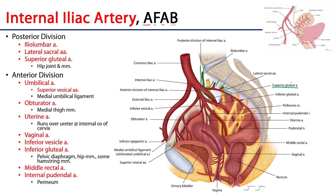The anterior division has very many branches, and you're really going to have to pay close attention to where these branches originate from the anterior division of the internal iliac, as well as their targets. One of the early major branches is the umbilical artery, which runs anteriorly through the pelvis towards the anterior body wall, where it loses its patency.